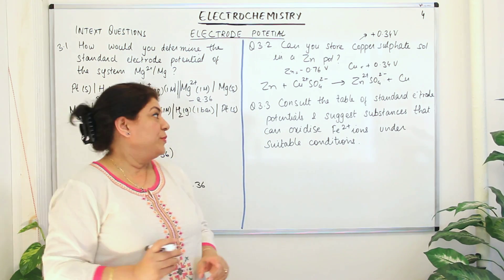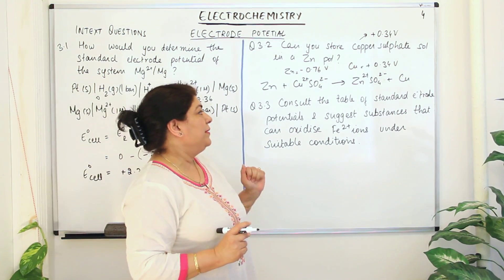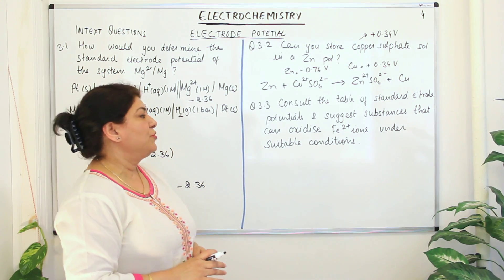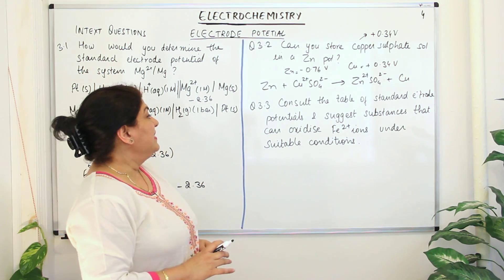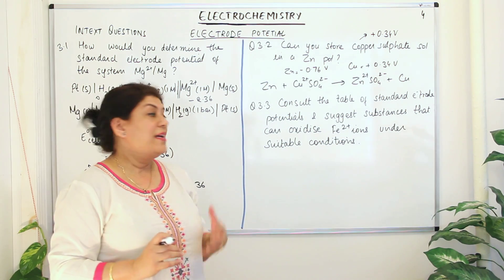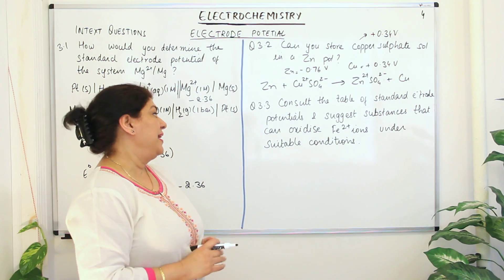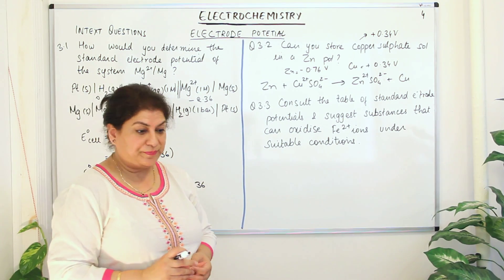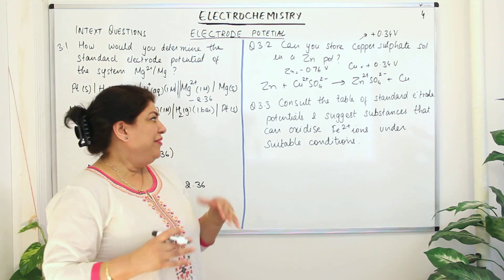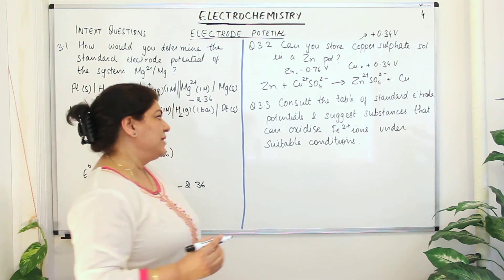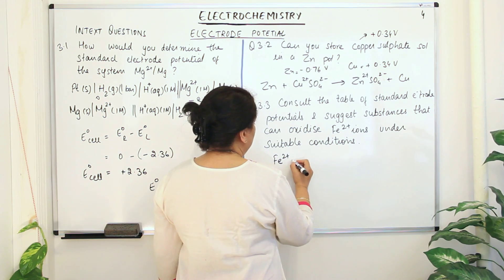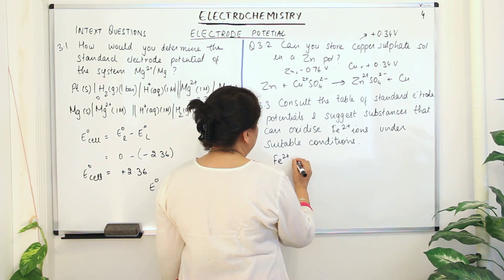Let us come to question 3.3: consult the table of standard electrode potentials and suggest substances that can oxidize ferrous ions under suitable conditions.